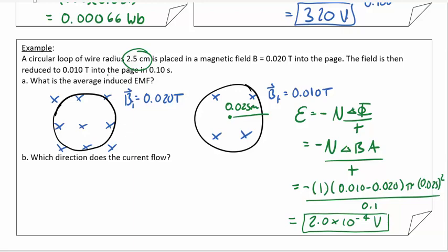We had a field that was going into the page, fairly strong, and it was reduced so that it was still into the page, but not as strong. And so overall, the reduction of this field meant that our change in field, or overall change in field, was out of the page, or in this case, negative.